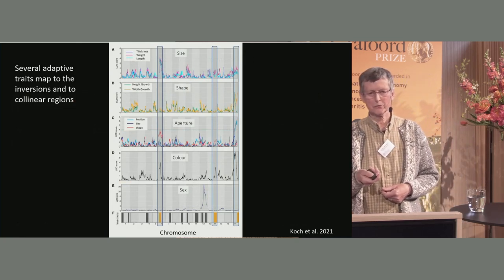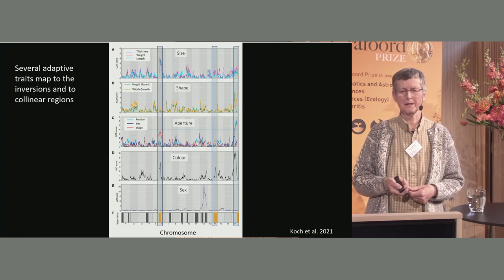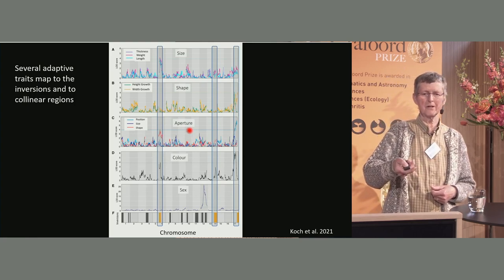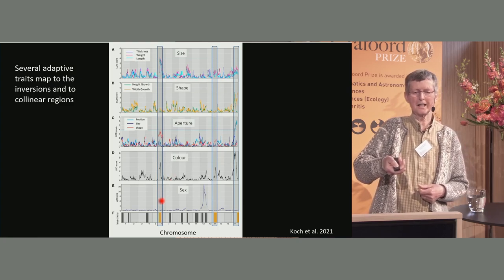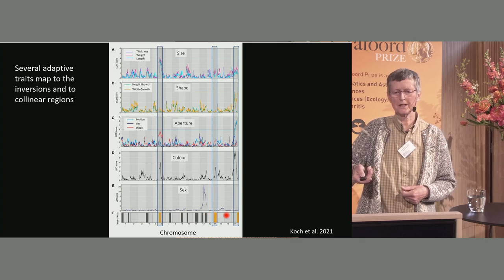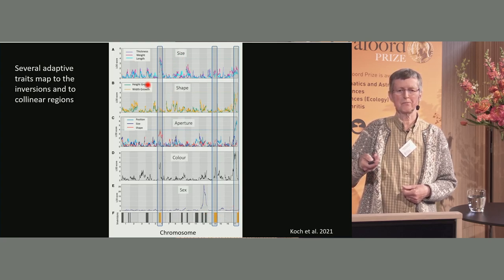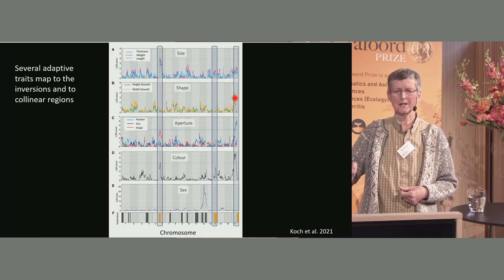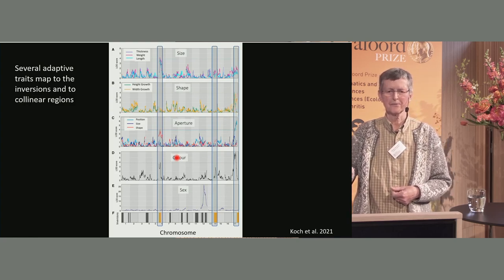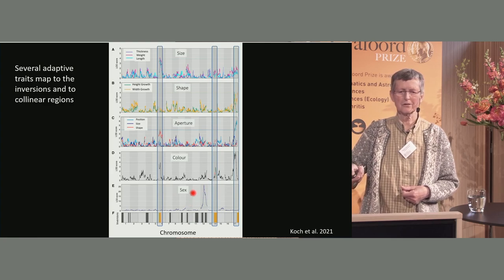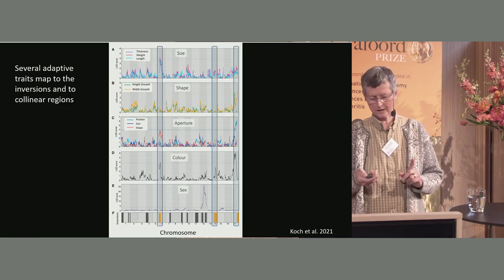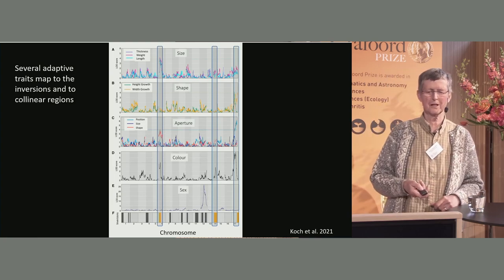What about the phenotypic traits? By QTL mapping, we have been able to locate some of the traits to different parts of the genome. Many of the peaks hit again these three chromosomes — 6, 14, and 17. Size, for example, has a QTL quite heavily loaded on the inversion on chromosome 6. Shape is a little more distributed on chromosome 17. I won't talk about sex determination now because it turned out to be quite complicated — more chromosomes and inversions are involved.